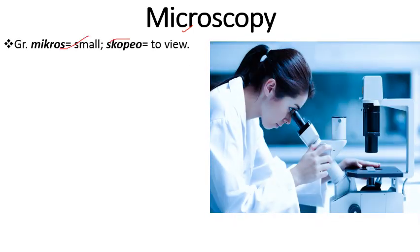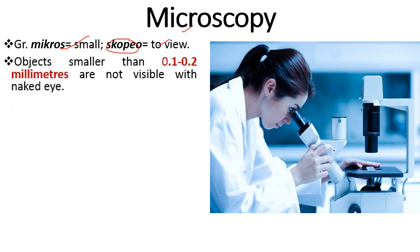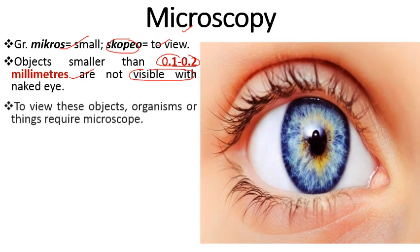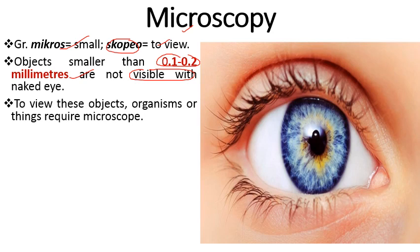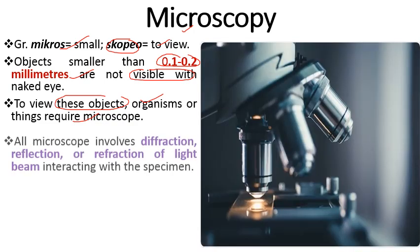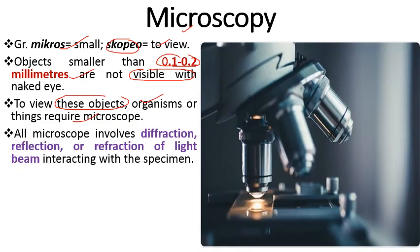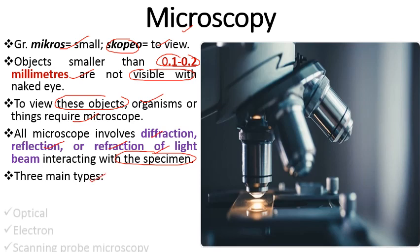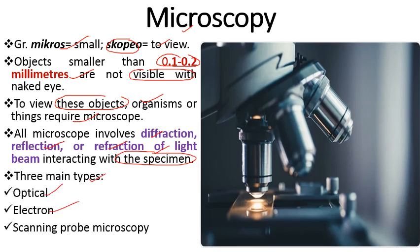So firstly, what is microscopy? This word is derived from the Greek word 'micros', which means small, and 'scopio', which means to view. It is the device used to view small objects not visible to the naked eye — objects smaller than 0.1 to 0.2 millimeters. To observe these objects, organisms, or things, we require an instrument known as a microscope. All microscopes involve optical phenomena like diffraction, reflection, and refraction of light beams that interact with the specimen. There are mainly three types of microscopy: optical microscopy, electron microscopy, and scanning probe microscopy.